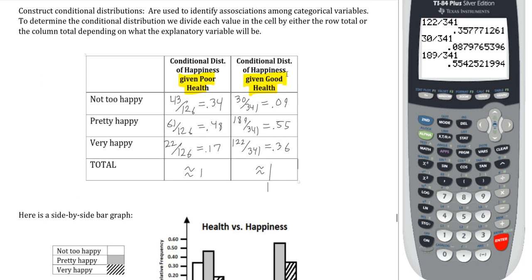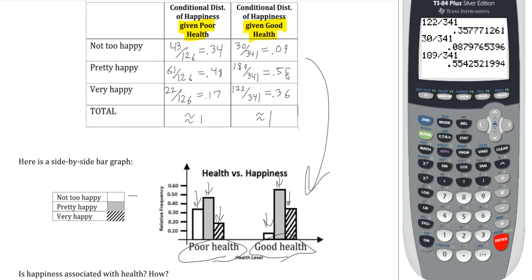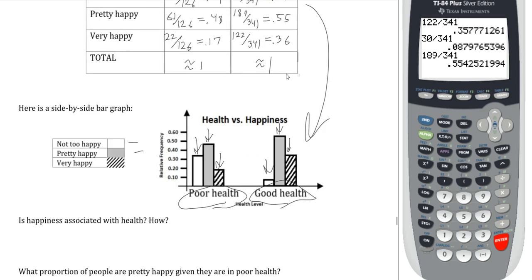These conditional distribution values are also shown in a side-by-side bar graph. Note these are bar graphs, not histograms, because we're dealing with qualitative variables. For each health status we have a different bar showing what percentage falls into each happiness category — for example, of those in poor health, how many are not too happy, pretty happy, and very happy.